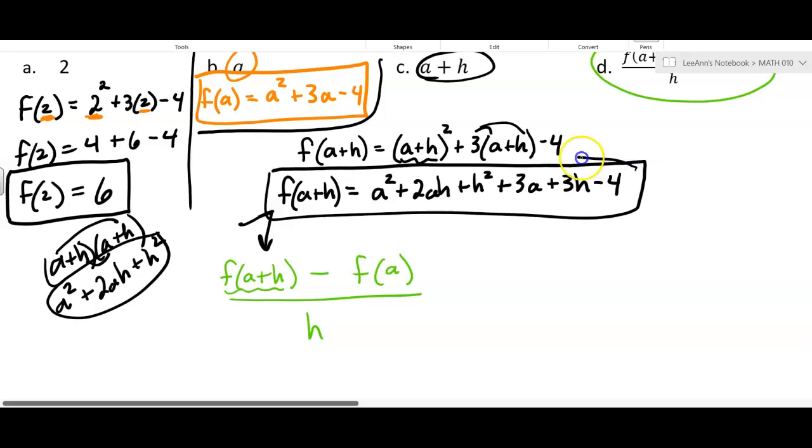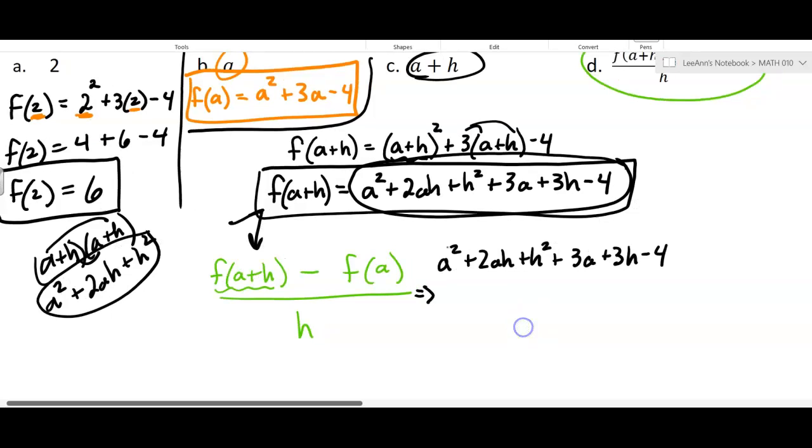Now, it's long. It's all of this stuff. So I'm going to write that. A squared plus 2AH plus H squared plus 3A plus 3H minus 4. That was all the f of A plus H. That was that part right there.